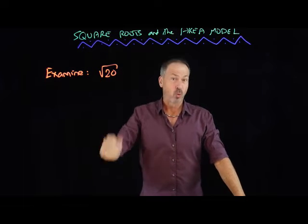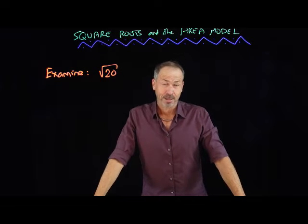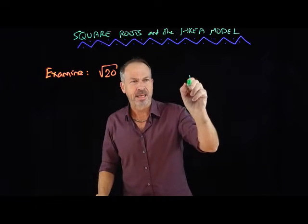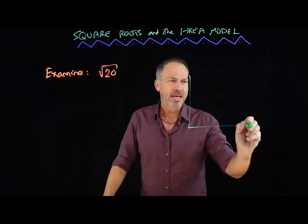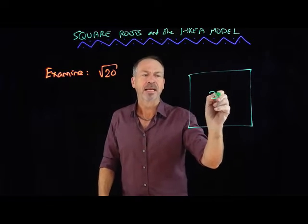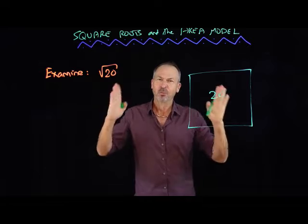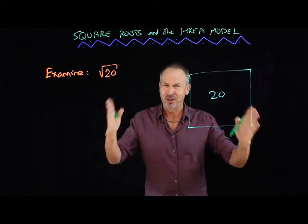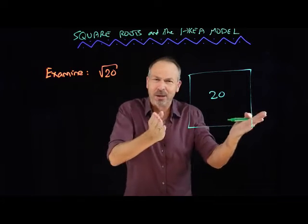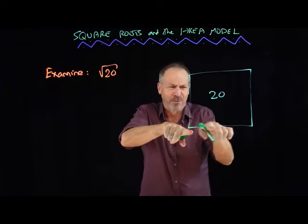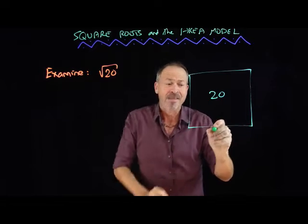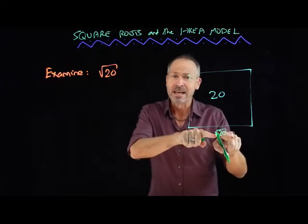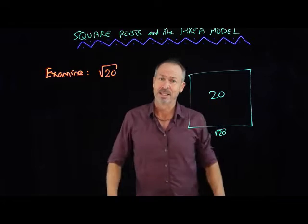Let's examine the square root of 20. Using geometry language, I'm talking about a square — so there's a square involved, and it's going to be a square of area 20. Square root: we're looking for the root feature of the square of area 20, the base, fundamental feature. The most fundamental feature of a square is probably its side length, and that's indeed what we call the square root of 20 — the side length of the square whose area is 20.